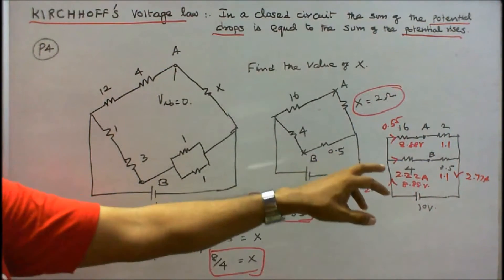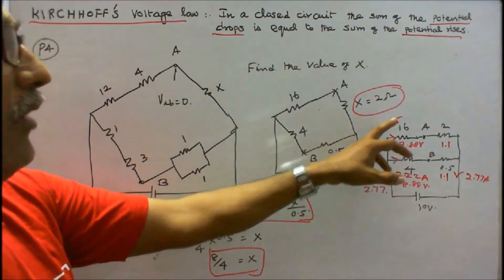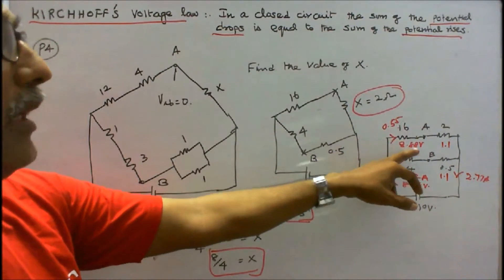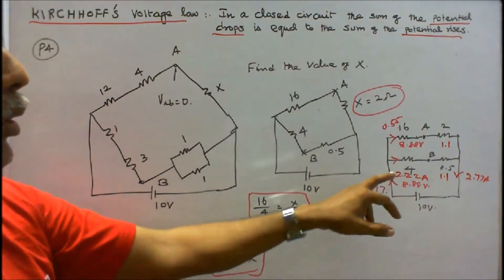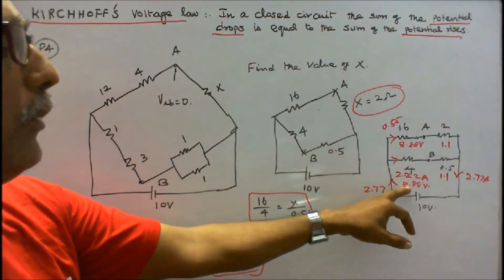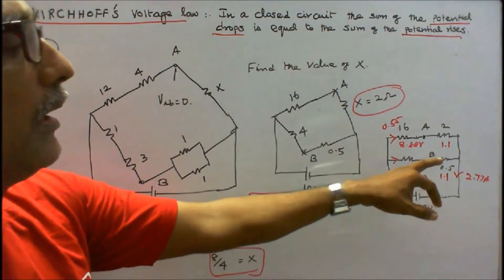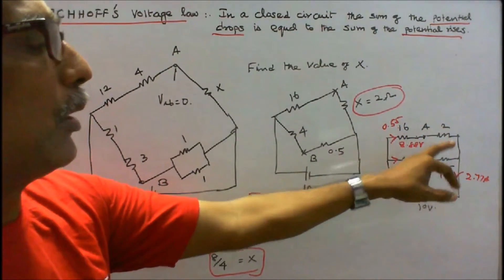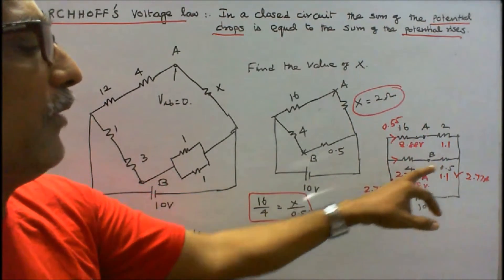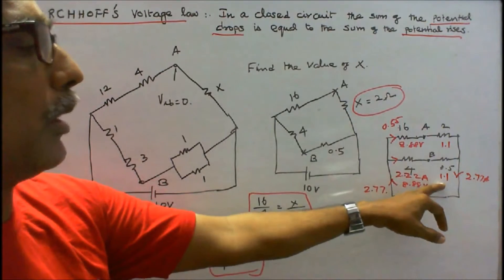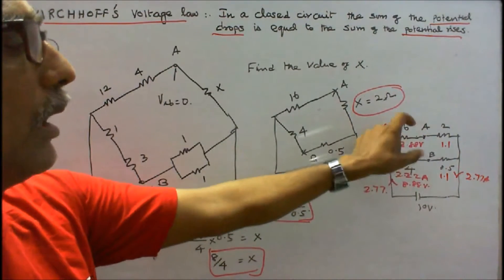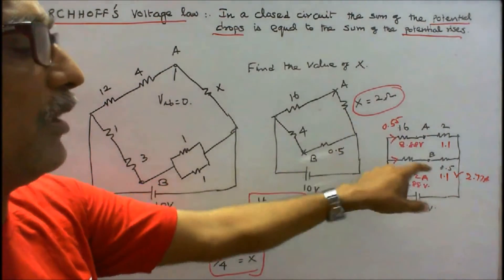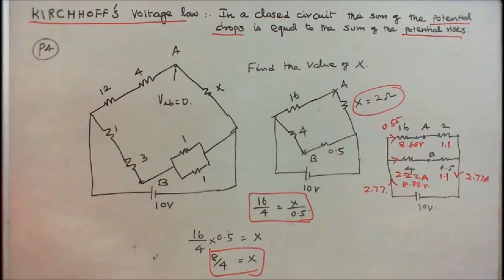The voltage drop is: 0.55 × 6 = 8.88 volts on one branch; 2.22 × 4 = 8.88 volts on the other branch; and 0.55 × 2 = 1.1 volts. The voltages are equal, hence the voltage across AB is equal to 0. Kirchhoff's Current Law as well as Kirchhoff's Voltage Law is verified. X value is 2 ohms.